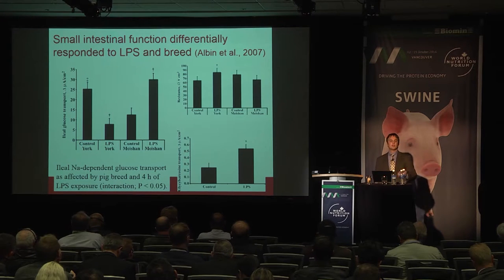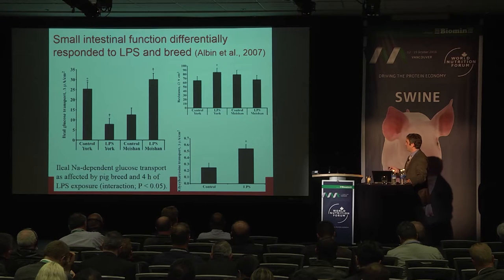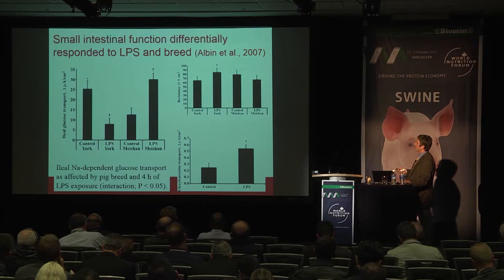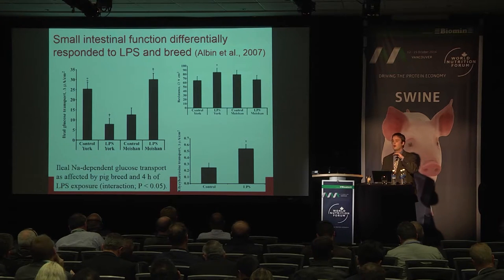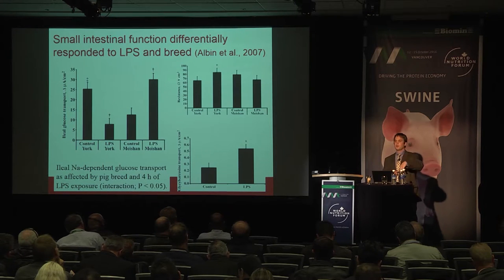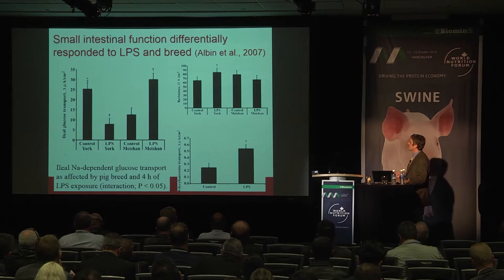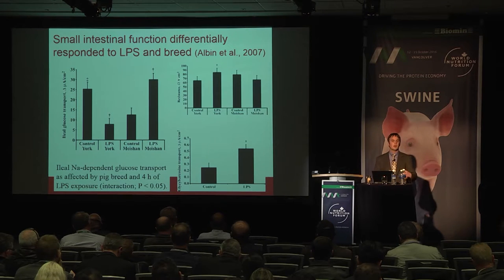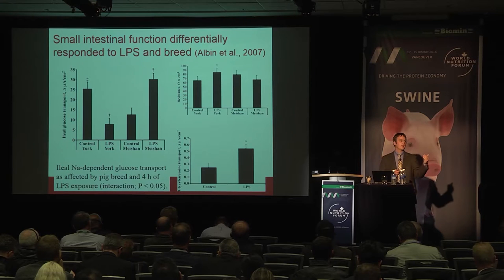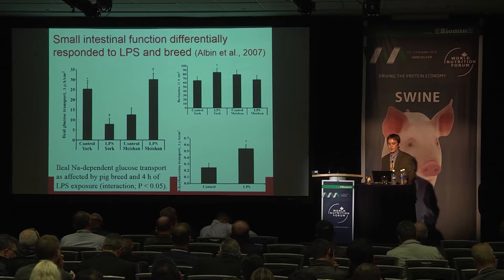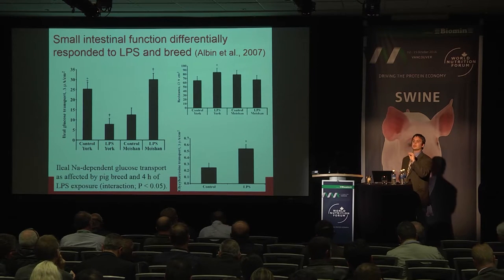The nutrient transport machinery seems intact or differentially responding — not always negatively — with an LPS or endotoxin challenge in pigs. Looking at transepithelial resistance: the higher the number, the more resistant and the better the intestinal barrier. There is absolutely no negative effect of LPS or endotoxin at four hours in these pigs on barrier integrity as measured by TER — though that's not to say there are no differences in macromolecular permeability, as this is just electrophysiology.